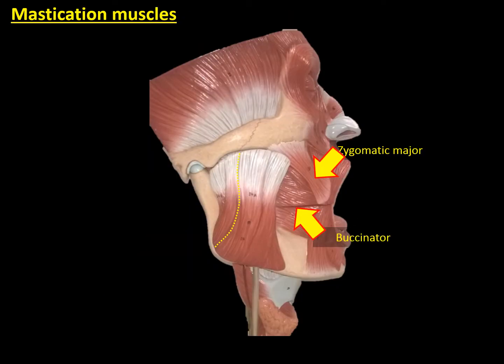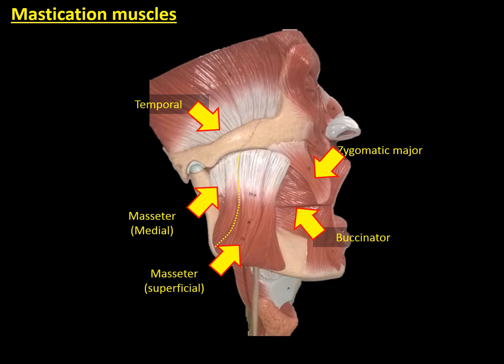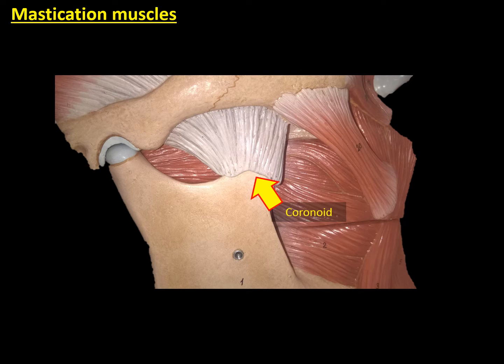Now let's have a look at the mastication muscles with this other anatomical model. In this lateral view, we can see at the superior part the temporal muscle, and its tendon, which is going to cross the zygomatic canal and attach to the coronoid process. At the inferior part, we can observe the masseter muscle — the superficial part and also the deeper part. We can see the white part represents the tendon, which is attached to the zygomatic arch. If we remove the masseter muscle, we can observe how the tendon of the temporal muscle crosses the zygomatic canal to attach to the coronoid process.